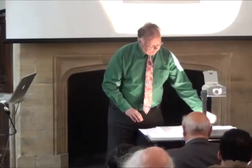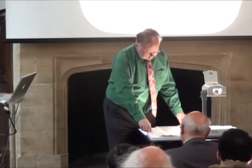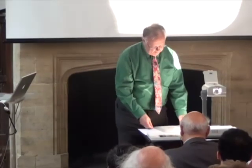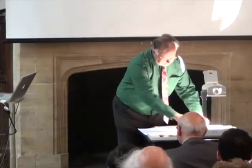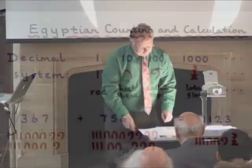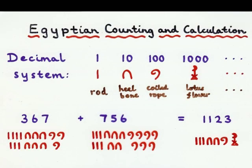How did the Egyptians count? Well, like most counting systems, theirs was based on 10, but it used different symbols for 1, 10, 100, 1,000, and so on. It had a vertical rod for 1, a heel bone for 10, a coiled rope for 100, a lotus flower for 1,000, and so on. You'll recall that Roman numerals similarly use different symbols for 1, 10, 100, and 1,000.